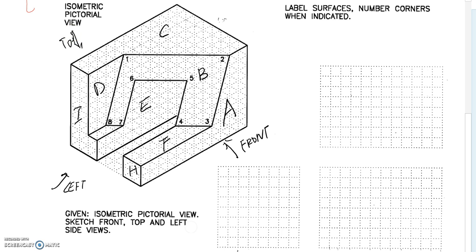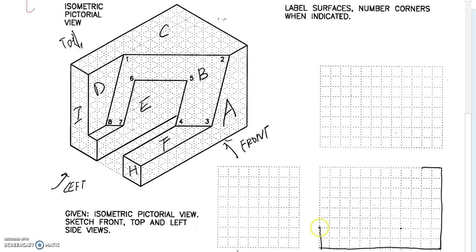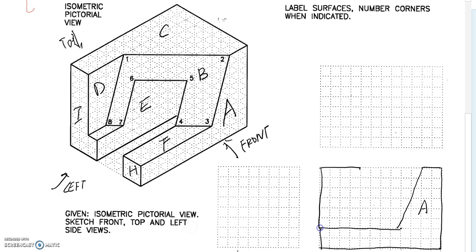We will start the front first. We are going to take a look at the surfaces parallel to the front side of the glass box. They are A, D, and E. We are going to draw surface A first. Once we finish A, we are going to move on to surface D. This is D.